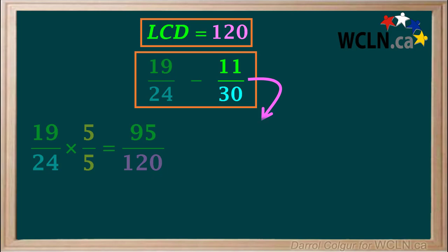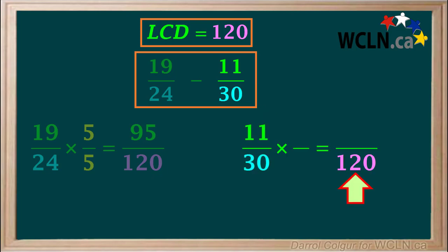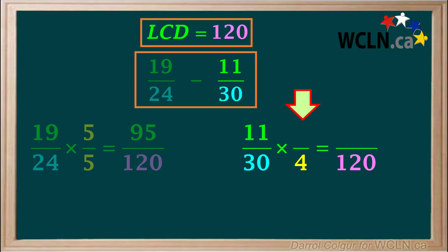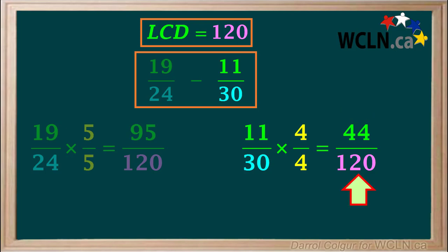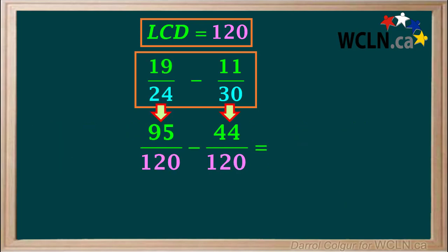Now we'll have a look at the other fraction, 11 over 30. To rewrite this fraction with a denominator of 120, we must multiply the denominator 30 by 4. 30 times 4 is 120. Because we multiply the denominator by 4, we must also multiply the numerator by 4. And 11 times 4 is equal to 44. So the fraction 11 over 30 can be written as 44 over 120. After writing the two fractions with a common denominator of 120, we now have the expression 95 over 120 minus 44 over 120.